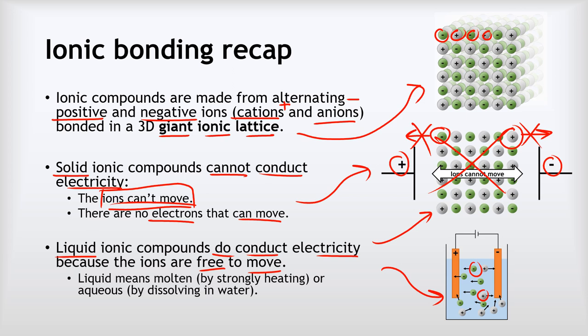How do we make an ionic compound liquid? We do it in two ways: we can either melt it by very strongly heating it, or we can dissolve it in water. It doesn't matter which — as soon as we've made them into a liquid form, these ionic compounds can conduct electricity.